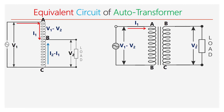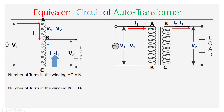The current flowing through section AB is I1, and the current flowing through section BC is I2 minus I1, where I2 minus I1 is shown on the secondary side. The total number of turns in section AC is equal to N1, and the number of turns in section BC is equal to N2. Therefore, the number of turns in section AB is equal to N1 minus N2, that is total turns minus turns in BC. Here we show the number of turns as N1 minus N2.